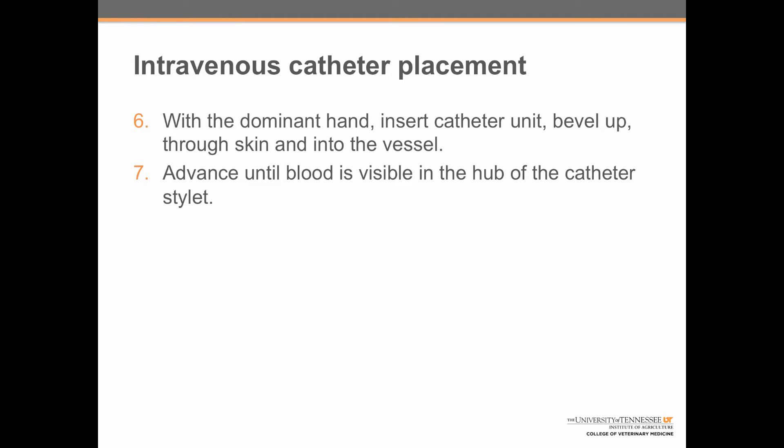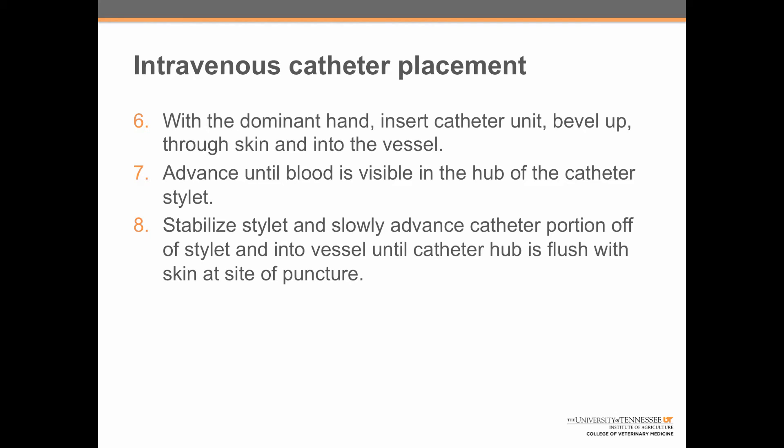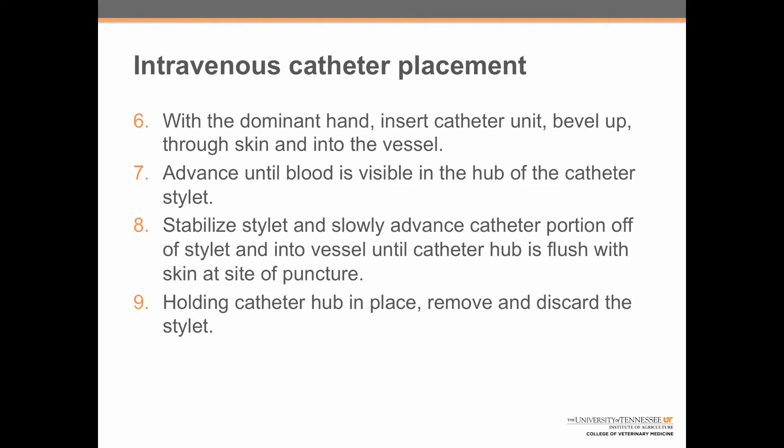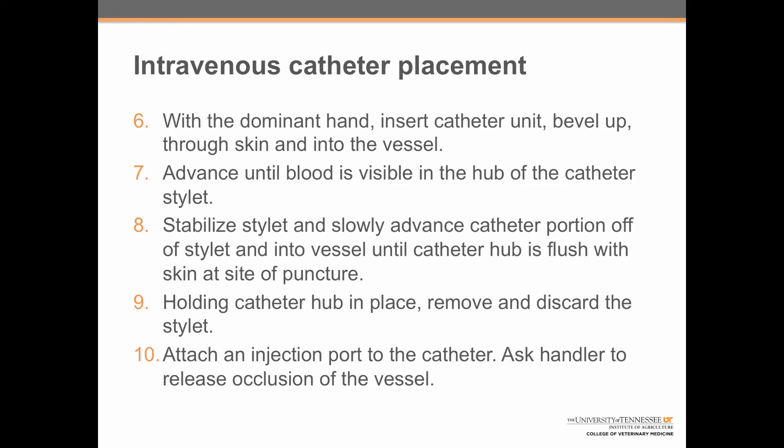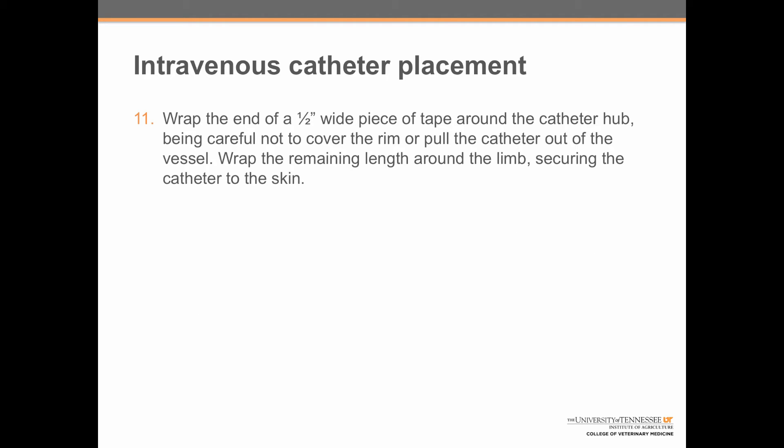Step 7: advance until blood is visible in the hub of the catheter stylet. Step 8: stabilize the stylet and slowly advance the catheter portion off of it and into the vessel until the catheter hub is flush with the skin at the site of puncture. Step 9: holding the catheter hub in place, remove and discard the stylet. Step 10: attach an injection port to the catheter and ask the handler to release occlusion of the vessel.